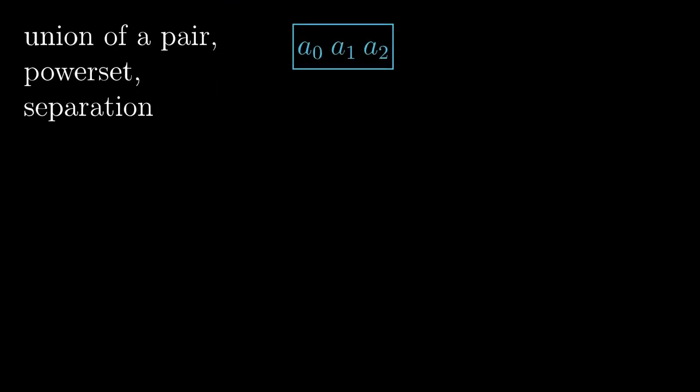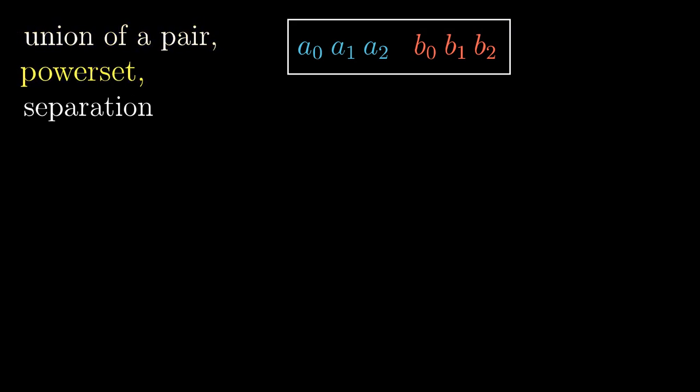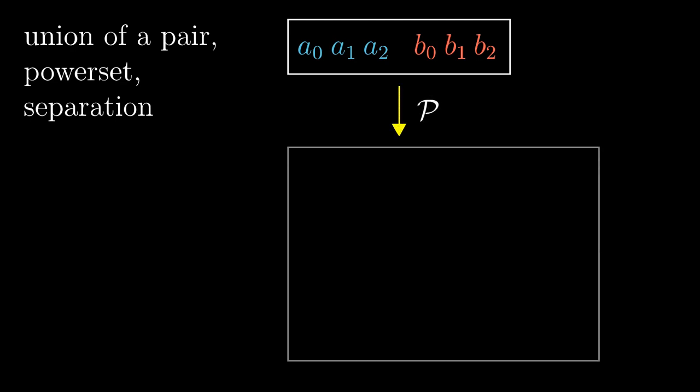We have two sets, A and B. We want their Cartesian product, so we start by taking their union. We need the axioms of pairing and union for that. After taking the first power set, we get a set with plenty of elements.